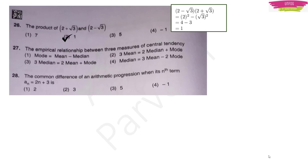The empirical relationship between the three measures of central tendency: 2 Mean = 3 Median − Mode. Looking at the options carefully, option 3 is the right answer because '3 Median = 2 Mean + Mode' is given, which can be rewritten as '2 Mean = 3 Median − Mode'. For the common difference of an AP whose nth term is aₙ = 2n + 3: use aₙ₊₁ − aₙ = (2n + 5) − (2n + 3) = 2. Option 1 is the right answer.